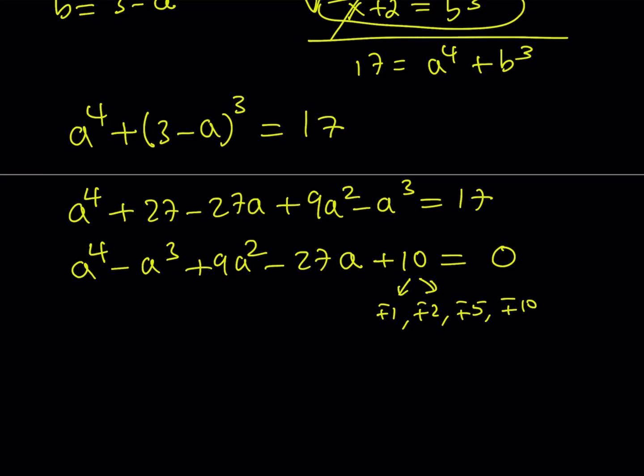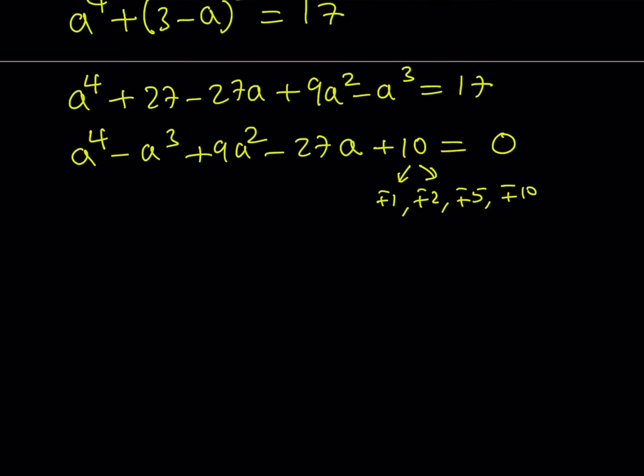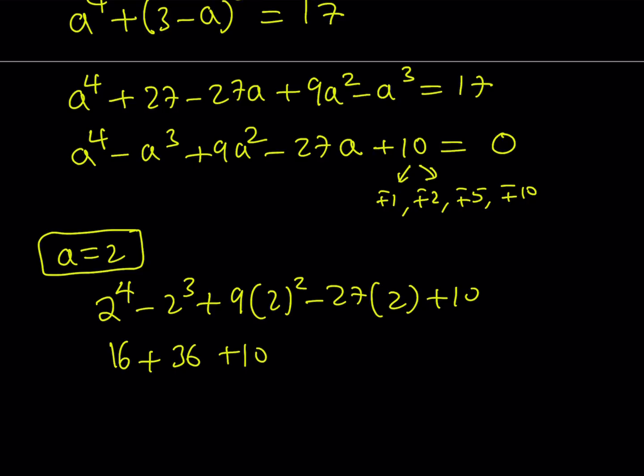But after the examination of all these numbers by substitution and all that stuff, you're going to realize that a equals 2 is a solution. Now why do I say that? Because I tested it out for you. And if you plug in 2, you'll see the following. 2 to the 4th power minus 2 to the 3rd power plus 9 times 2 squared minus 27 times 2 plus 10. Let's go ahead and add the positives first. 16 plus 36 plus 10 minus 8 minus 54. This is 52, 62. This is 62, and that's minus 62. And the result is 0, which means that a equals 2 is a solution. So this equation has an integer solution and that is a equals 2. And knowing a equals 2 basically gives us the value of x.